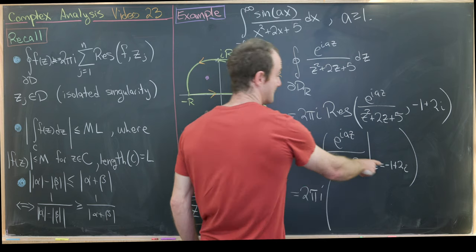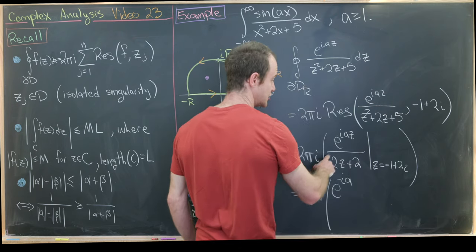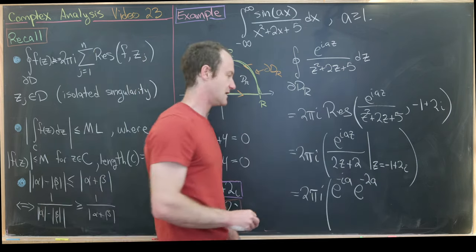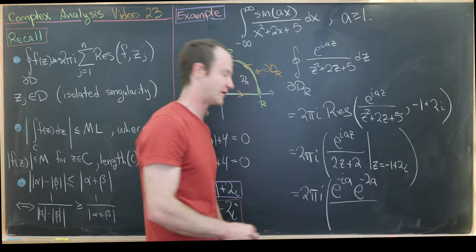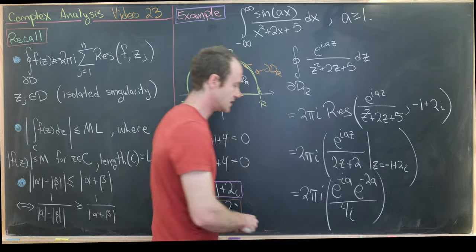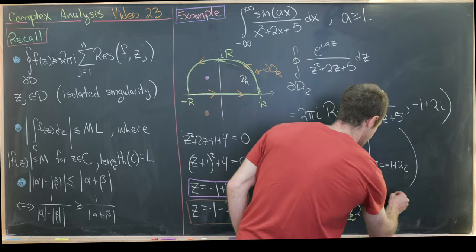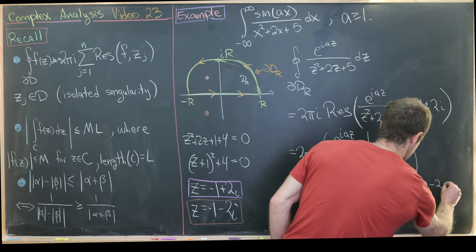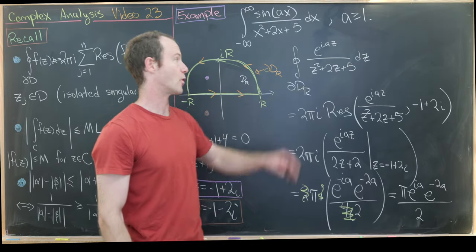Plugging in z = −1 + 2i: in the numerator we get e^(−ia) · e^(−2a) (since i · i = −1), and in the denominator the real part cancels leaving 4i. Simplifying: the i's cancel and the 2 in the numerator reduces the 4 to 2, leaving π · e^(−ia) · e^(−2a) / 2. That's the value of the contour integral.